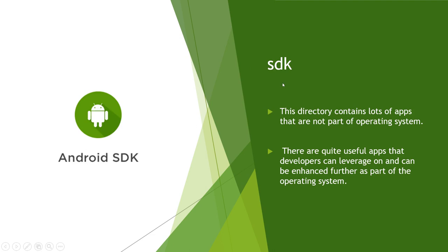SDK stands for Software Development Kit and is a very important folder — without an SDK we cannot compile an Android application. This directory contains many Android apps that are not part of the operating system but are quite useful apps that developers can leverage and enhance further to become system applications. Once enhanced, they become part of the OS. SDK is very important for compiling any Android apps.